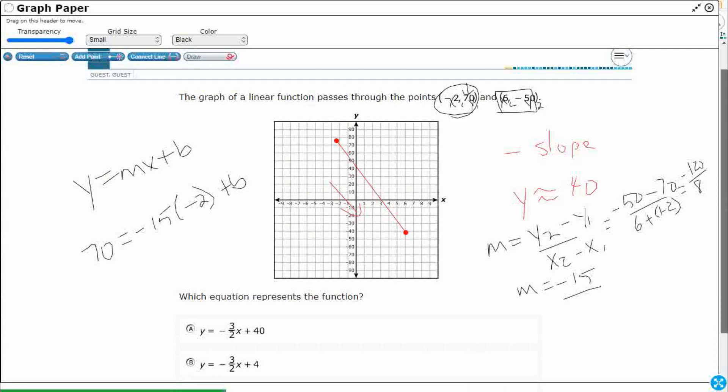So 70 equals, I've got the negative 15, and I've got the negative 2. So that's going to end up being a positive 30 plus b. So I just subtract 30 from both sides. That's going to cancel that out, and I'm going to get 40. So I was correct. I said y is approximately 40. Y actually equals 40.